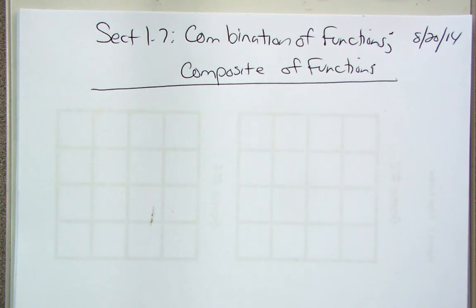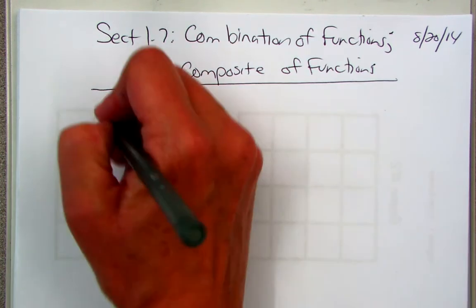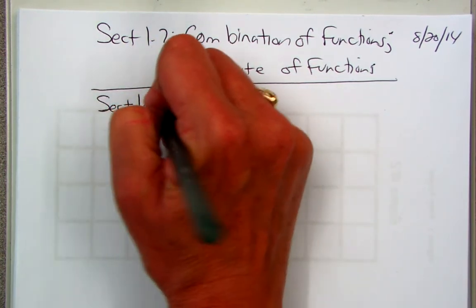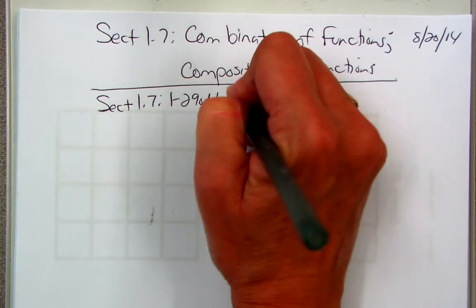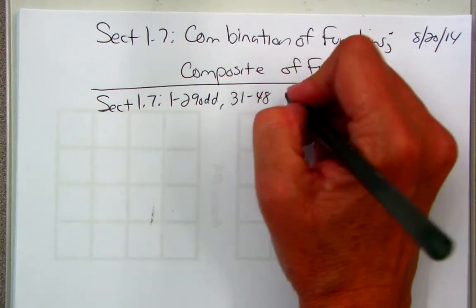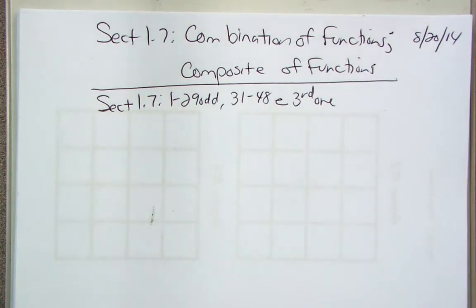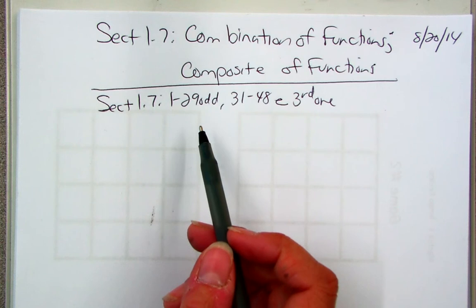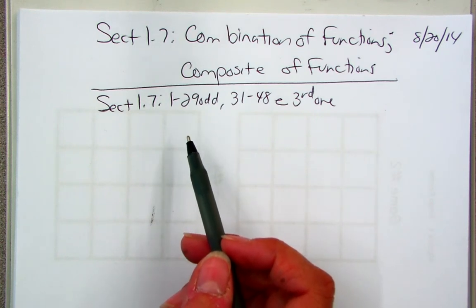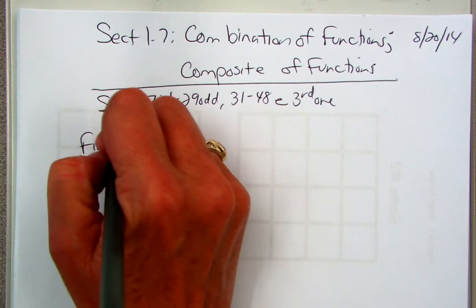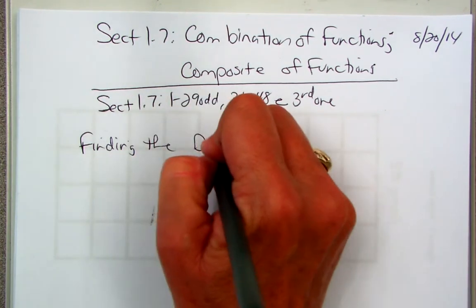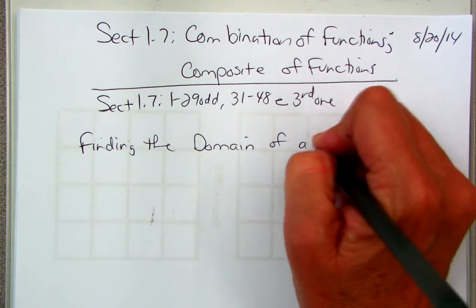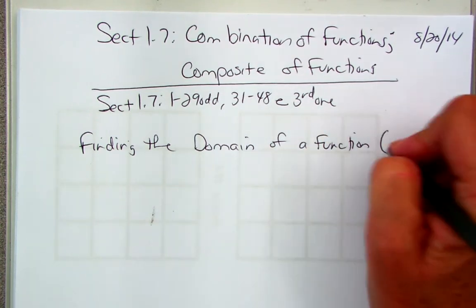Today, in this short period, I'm going to do combination — which is what your homework was — but I will also address what I told you not to do about the domain. We didn't do a lot about domain last year, so I'm going to start with that first. Let me write down the homework assignment: 1 through 29 odd, 31 through 48, every third one. I skipped 1 through 29 odd because that's where you first practice domain. So, finding the domain of a function — algebraically.